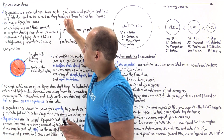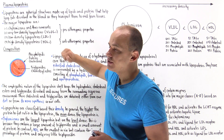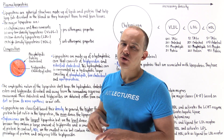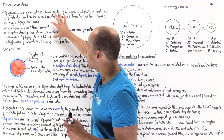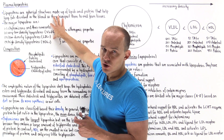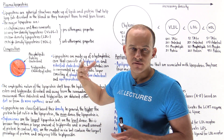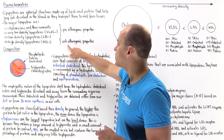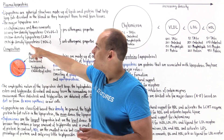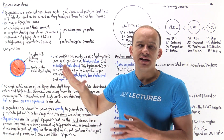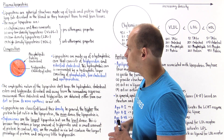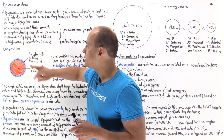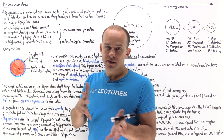Chylomicrons and their remnants, very low-density lipoproteins, intermediate-density lipoproteins, and low-density lipoproteins have pro-atherogenic properties. If these are present in the bloodstream in high quantities, that increases the risk of developing atherosclerosis. In contrast, high-density lipoproteins are anti-atherogenic — if present in high quantities, they decrease the risk of developing atherosclerosis. That is exactly why LDLs are called the bad cholesterol and HDL is called the good cholesterol.